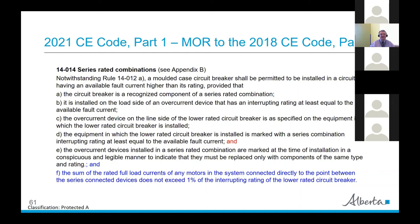On series rated combinations, item (f) has been added: the sum of the rated full load currents of any motors in the system connected directly to the point between the series connected devices shall not exceed one percent of the interrupting rating of the lower rated circuit breaker. This makes allowance for the motor contribution to any fault in series rated combinations.